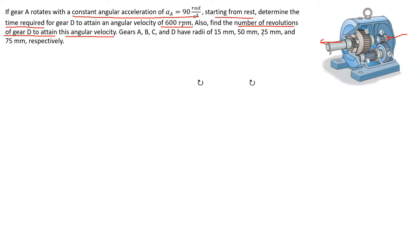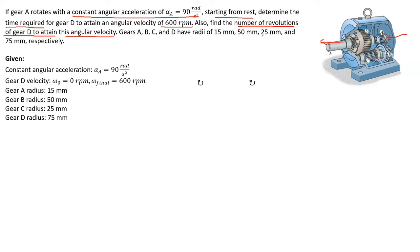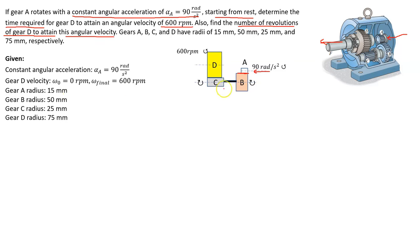Let's start setting things up with what we know. We have the constant angular acceleration of the input gear, gear A. Gear D has an initial velocity of zero RPM, and a final angular velocity of 600 RPM. We have all the radii of all the gears. In a free body diagram: gear A and B have a common tangential velocity since they mesh together, but their angular velocities are proportional to their respective radii — 15 millimeters versus 50 millimeters.